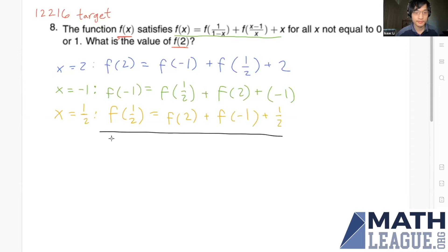right-hand side, we can write f(2) + f(-1) + f(1/2) = 2[f(2) + f(-1) + f(1/2)] + 2 - 1 + 1/2. We get this by adding together the left and right-hand sides of all three equations.